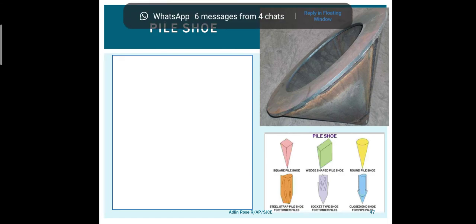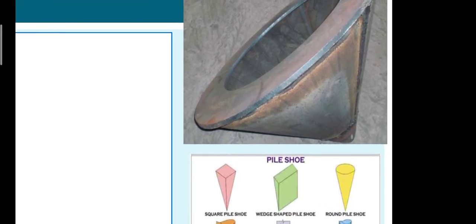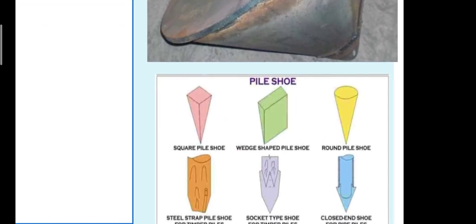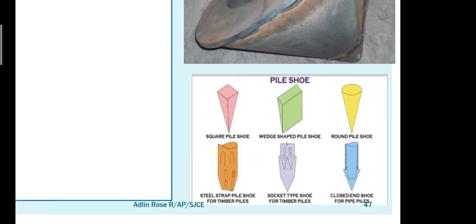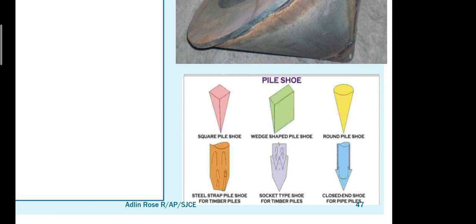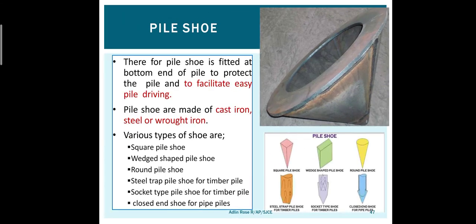Pile shoes: when driving precast piles into the ground, the bottom of the pile may get damaged. To avoid this damage, we provide pile shoes placed below the pile. Pile shoes can be conical, square, wedge-shaped, steel strap type, or socket type — also called closed end pile shoes. Nowadays steel or iron shoes are used instead of timber for driving piles into the ground.